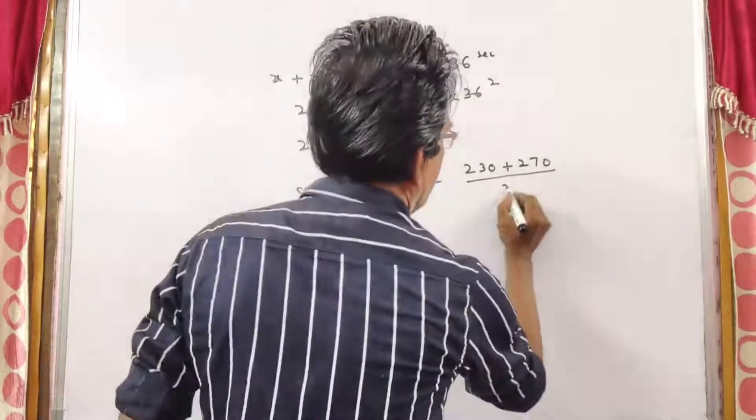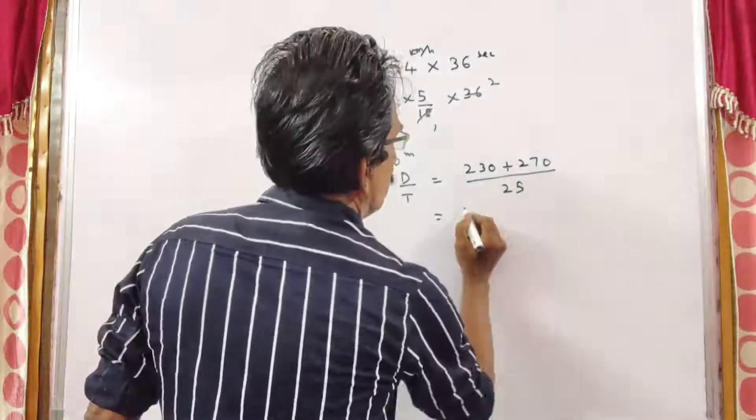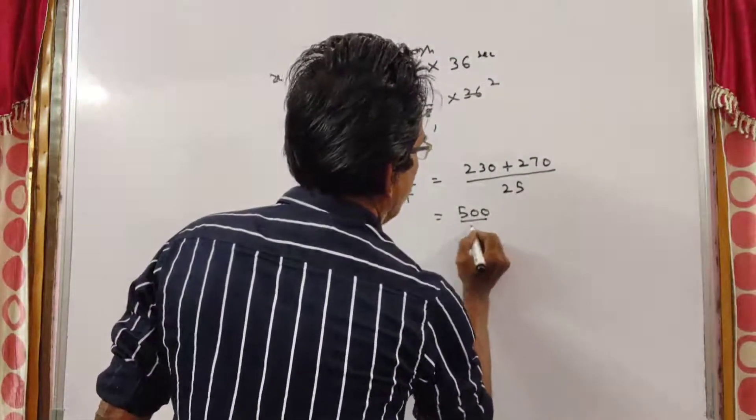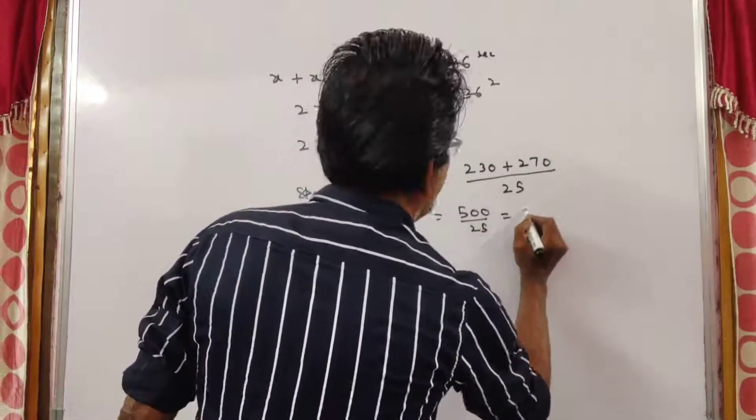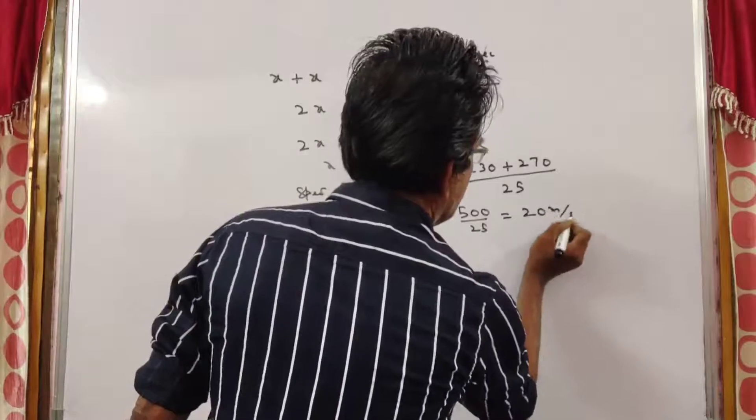This is the distance by time, 25 seconds. This is equal to 500 by 25, that is equal to 20 meters per second.